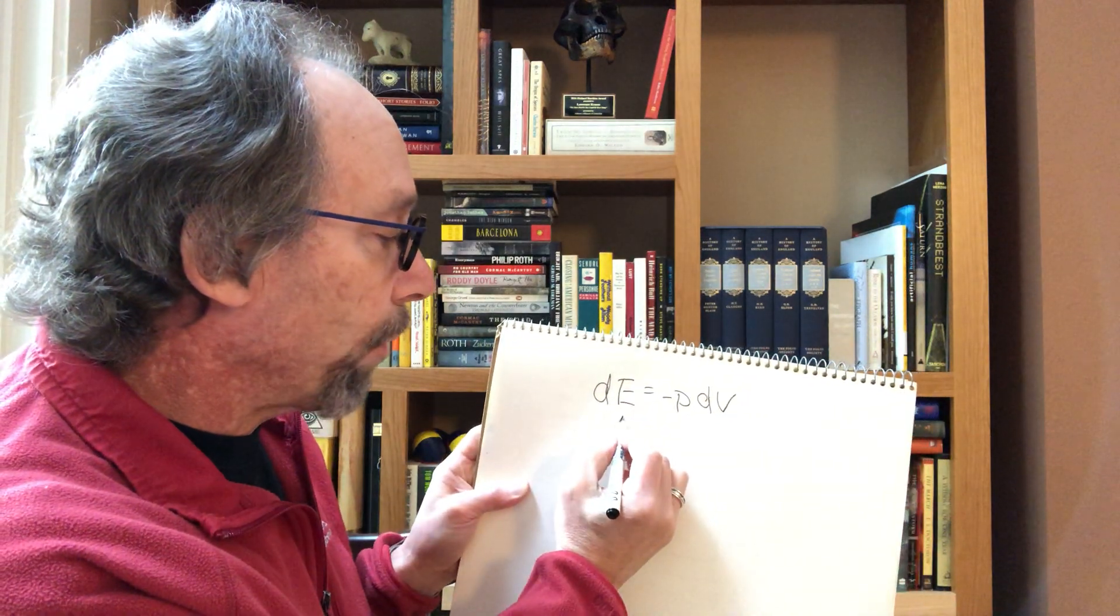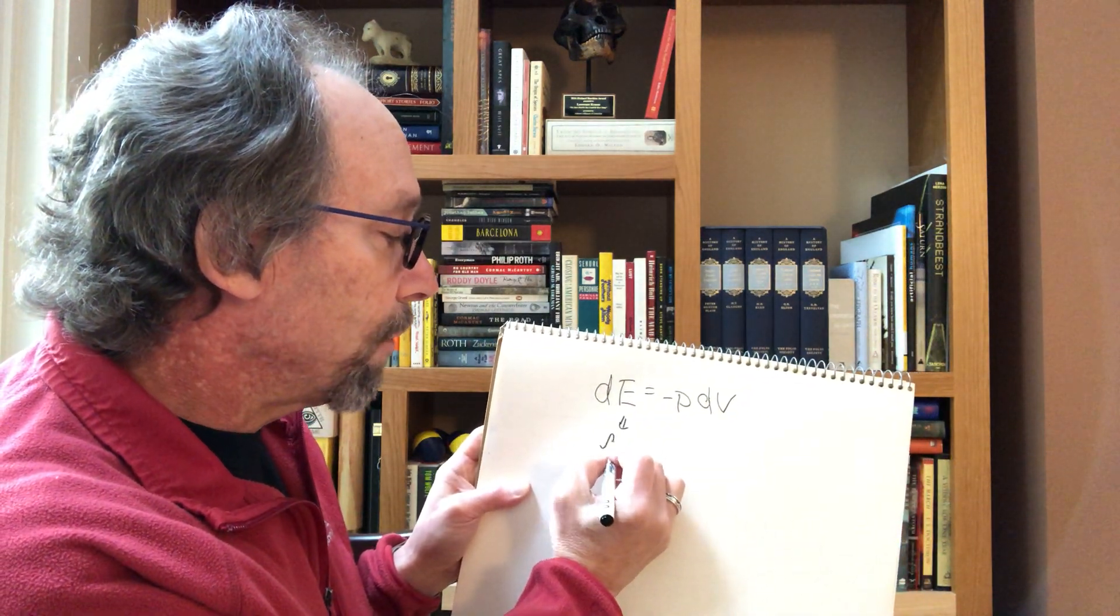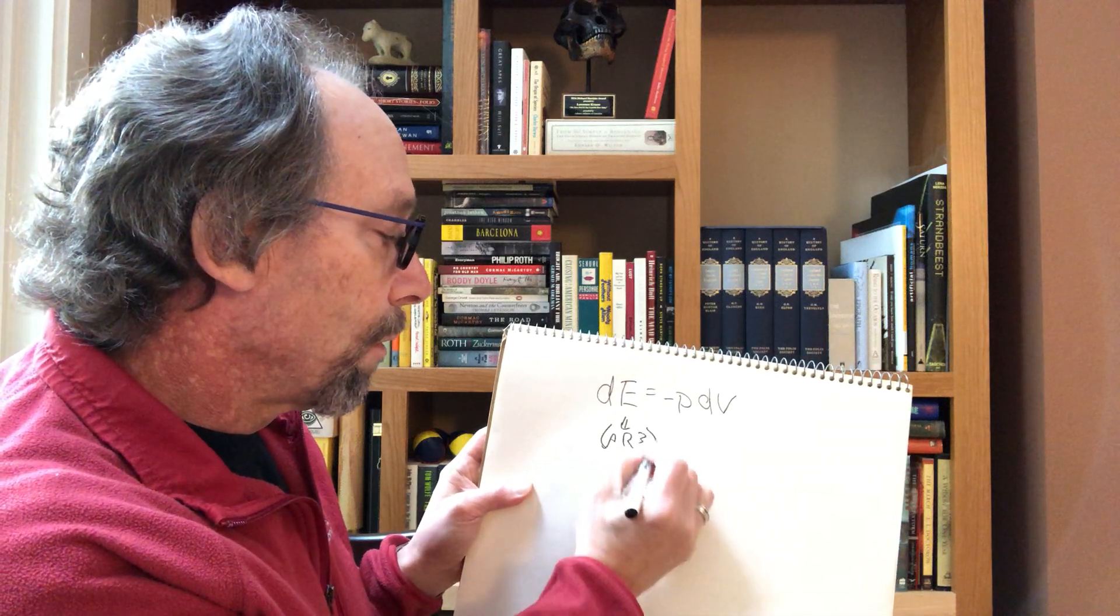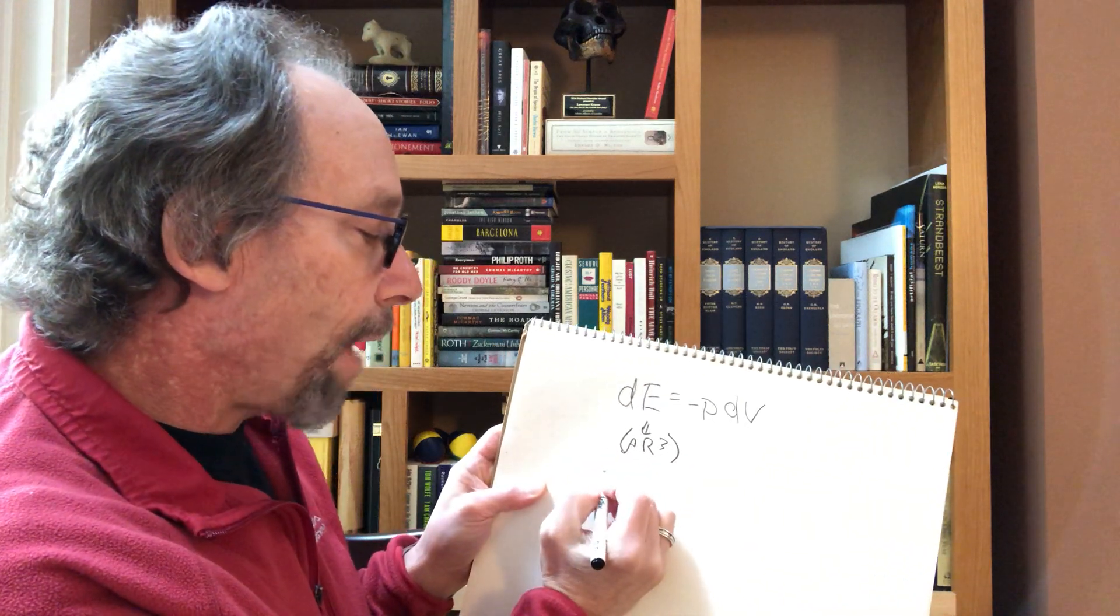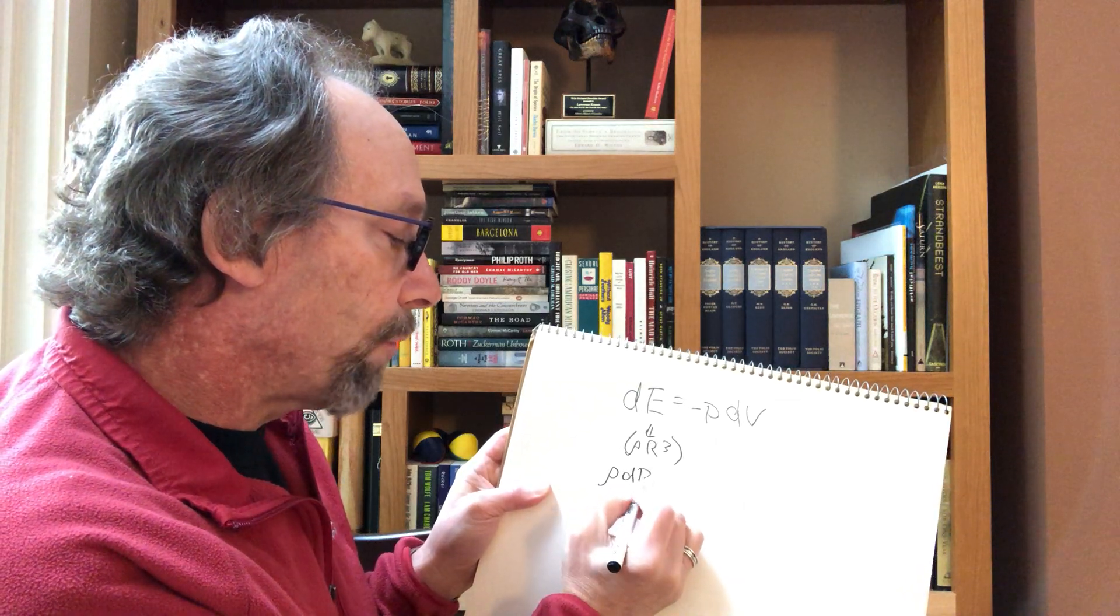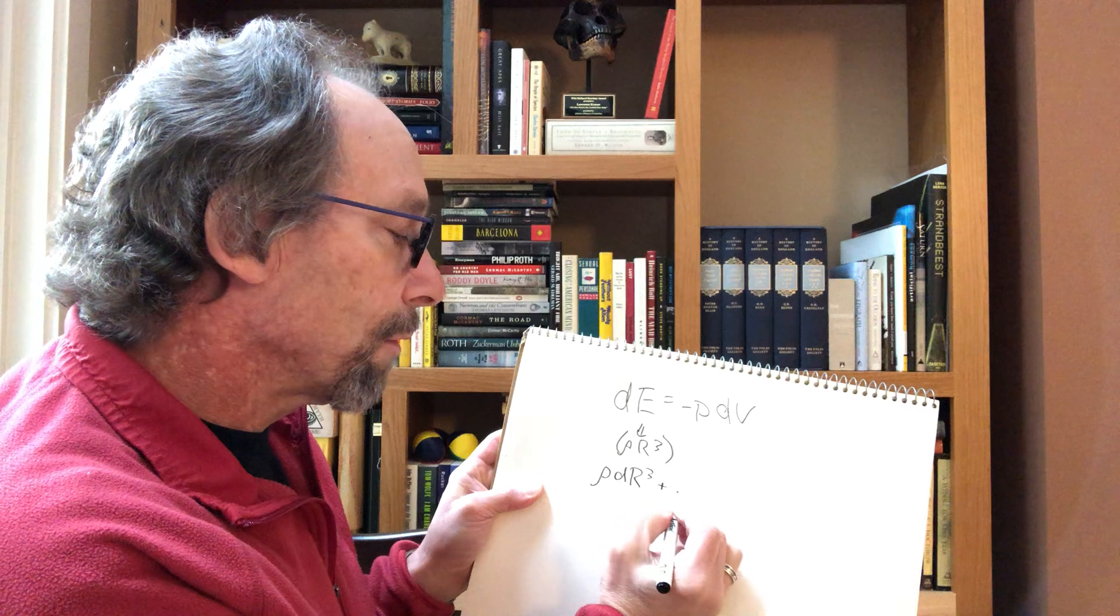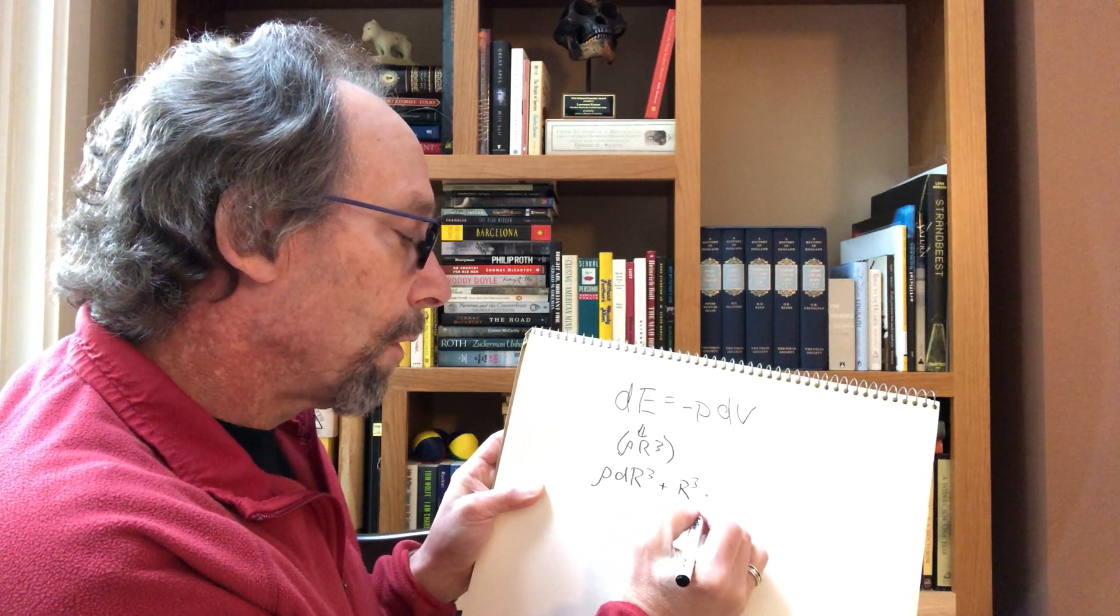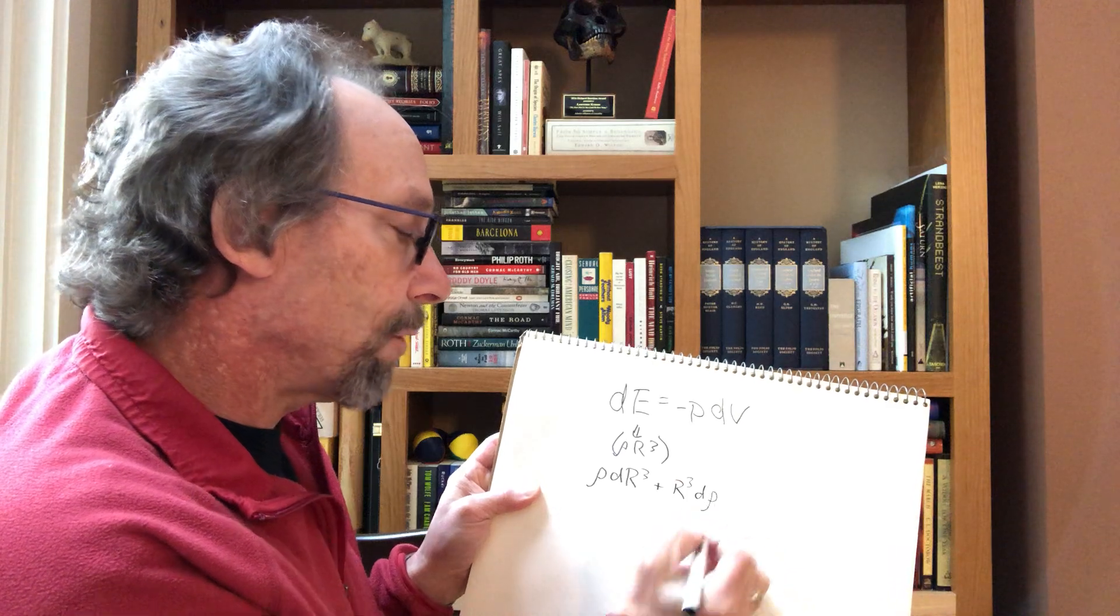Now we just have to remember in a given volume, the energy is the energy density times r cubed. So we'll take the derivative of that, which is the energy density times derivative of r cubed plus r cubed times the derivative of the energy density.